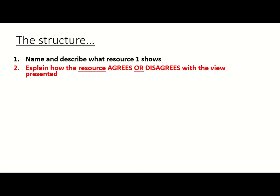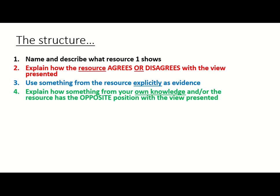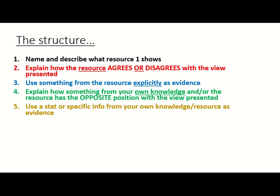The first thing you must do in your paragraph is name and describe what the first resource shows — it won't be called resource one, it'll be called resource 5d or 5e. Then you talk about how that resource either agrees or disagrees with the view that's been presented. Then you use something from that resource explicitly in your work as evidence — a figure, a fact, something you literally lift straight from the resource to prove it agrees or disagrees. Then, because you've also got to show your own knowledge, you give the opposing side. If the resource agreed with the viewpoint, you show your own knowledge about how it disagrees, and include a specific stat or info. This five step process is just one paragraph — you use it for every single resource.